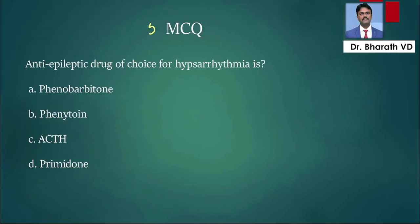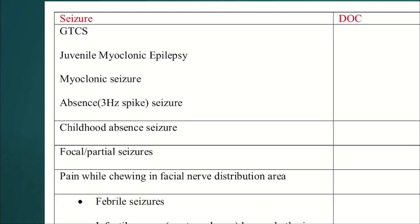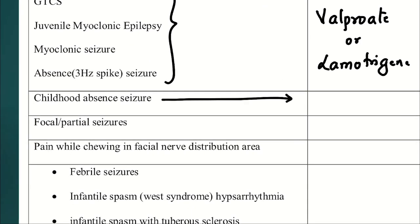Coming to the next question, the last one - fifth MCQ. Anti-epileptic of choice for infantile spasm, also called West syndrome. The drug of choice is ACTH. Now let us understand some of the drug of choices from here. Seizures and drug of choice: for GTCS, JME, myoclonic, absence seizure, the drug of choice is valproate. If valproate is not there, then we can give lamotrigine.